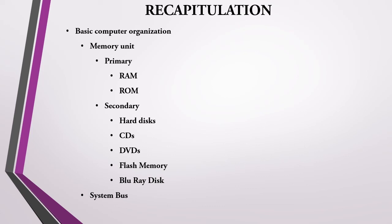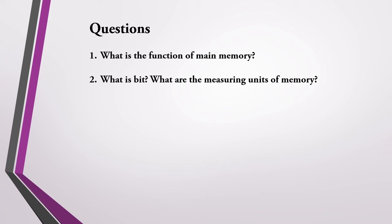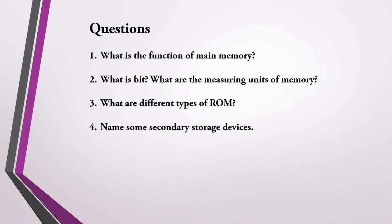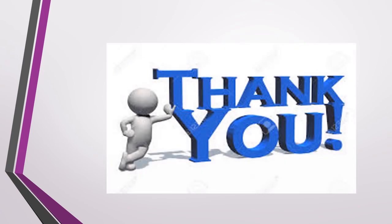Students, here are some questions related to our topic. First, what is the function of main memory? Second, what is a bit, and what are the measuring units of memory? Third, what are the different types of ROM? Fourth, name some secondary storage devices. Fifth, what is the difference between RAM and ROM? Sixth, what is the difference between primary and secondary memory? Go through the lesson and find out the answers. With this, we come to the end of the session. Thank you students, and I will meet you in the next session. Until then, take care and bye.